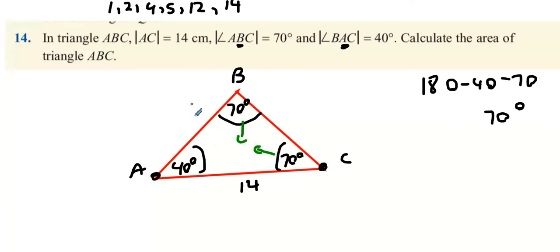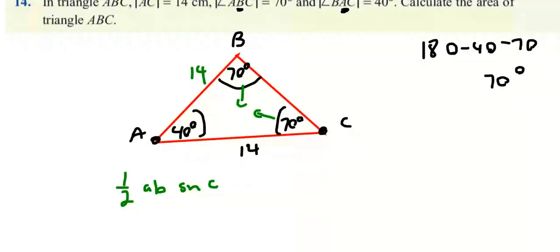This now means that this is an isosceles triangle. So if the 70 degrees looks at the 14, then the other 70 degrees must look at the other 14. So now we have two 14s and we can use one half a b sine c. So it's going to be one half times 14 times 14 sine 40.